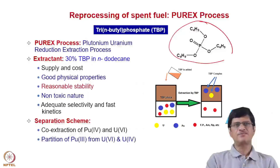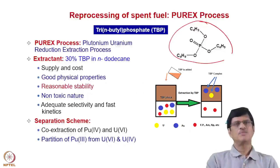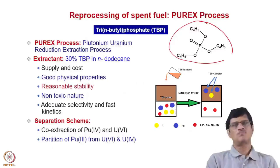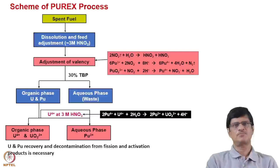The kinetics of uranium and plutonium extraction by TBP is relatively fast. TBP is non-toxic and has very low cost. In view of these good physical properties, TBP has been used in reprocessing plants worldwide for the last several decades. One of the major advantages of TBP is that the decontamination factors for the fission products are very high.